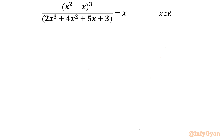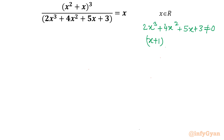The denominator cannot be equal to 0. So first we will analyze 2x³ + 4x² + 5x + 3 — this cannot equal 0. Checking odd and even powers: 2+5=7 and 4+3=7. Putting x = -1 satisfies the cubic equation, so x+1 is one factor. Using long division or synthetic division, the remaining quadratic factor is 2x² + 2x + 3, and it cannot be 0.